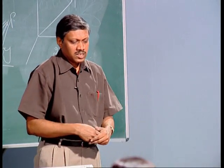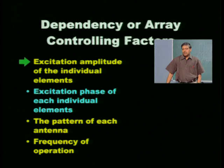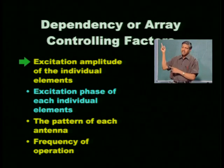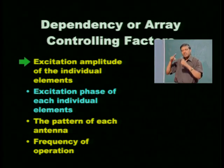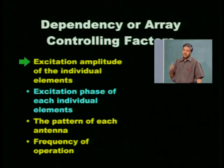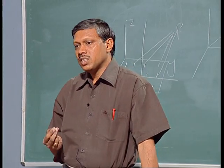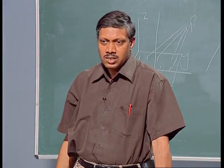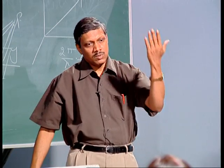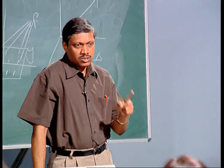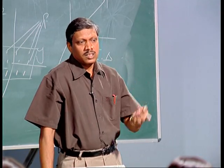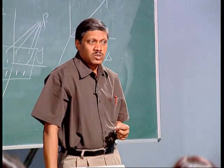The next controlling factor is the excitation amplitude of the individual element. As discussed, the current element magnitude I₀L directly affects field strength. If the excitation amplitude increases, the field intensity, power density, and radiation intensity at the point of interest all increase. So the amplitude of excitation — for example 2 volts versus 4 volts — controls the directive gain and the ability to reach longer distances.